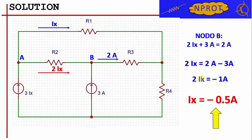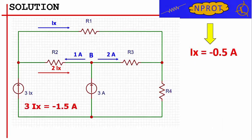At this point, it is easy to obtain that Ix is equal to minus 0.5 amperes. The value just found represents the solution of our exercise. The value obtained allows us to observe that the current generator on the left is delivering a current of 3 times Ix which is equal to minus 1.5 amperes, that is in the opposite direction with respect to the arrow indicated by the generator symbol.